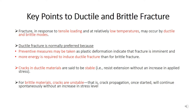Important points related to ductile and brittle fracture: ductile fracture occurs with sufficient plastic deformation, whereas brittle fracture occurs with very little plastic deformation. Some materials fail in a ductile fashion, some in a brittle fashion. But some materials, when subjected to tensile loading at low temperature, also fail in a brittle fashion. For example, mild steel fails in a ductile fashion at room temperature, but if subjected to tensile loading at low temperature, it fails in a brittle fashion.